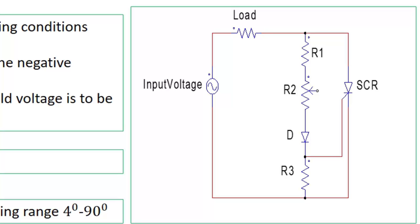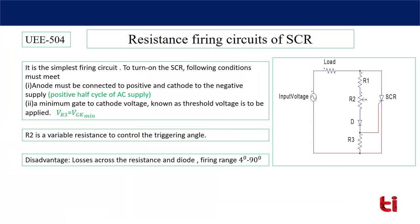If resistance R2 is at its maximum value, very low current will flow through R1, R2, D, and R3, so the voltage developed across R3 will be very low. To increase the voltage across R3 we reduce R2, allowing more current to flow, which increases the voltage drop across R3. By controlling R2 we control the voltage across R3 and therefore the gate-to-cathode voltage. This will be clearer when we see the simulated waveforms across the load, thyristor, input voltage, and R3.